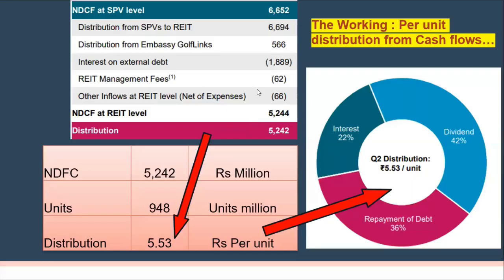This is now worked out on a per-unit basis. Of the Rs.5.38, how does it come about? At the REIT level, the distributable amount is Rs.5,242 million. There are 948 million units outstanding, so dividing Rs.5,242 million by 948 million units gives Rs.5.38 per unit. This total amount is then divided into interest, dividend, and repayment of capital, depending on the structure at the REIT and SPV level and how the funds have been infused.